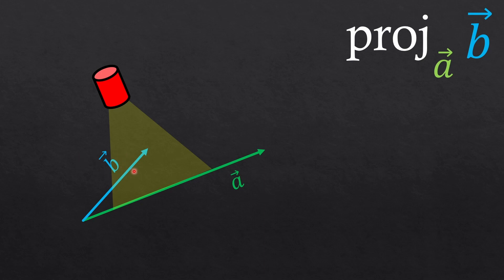So B is the object, and A is the screen. The shadow will look like this, make sense? And the length of this shadow is written as projection of the vector B onto the vector A. Again, A is the screen, and B is the object. You can think in that way.